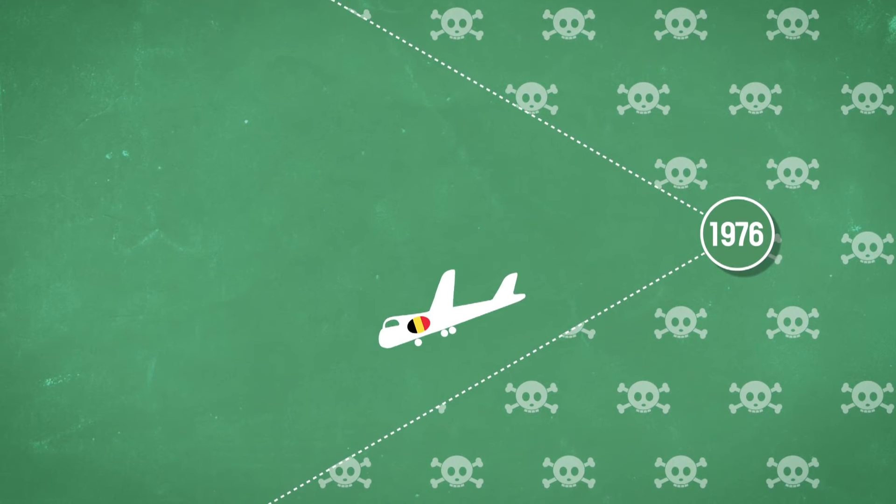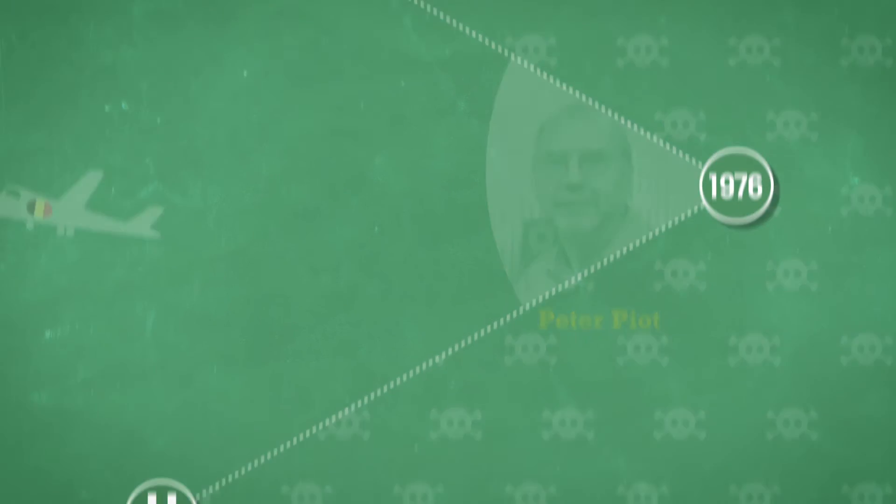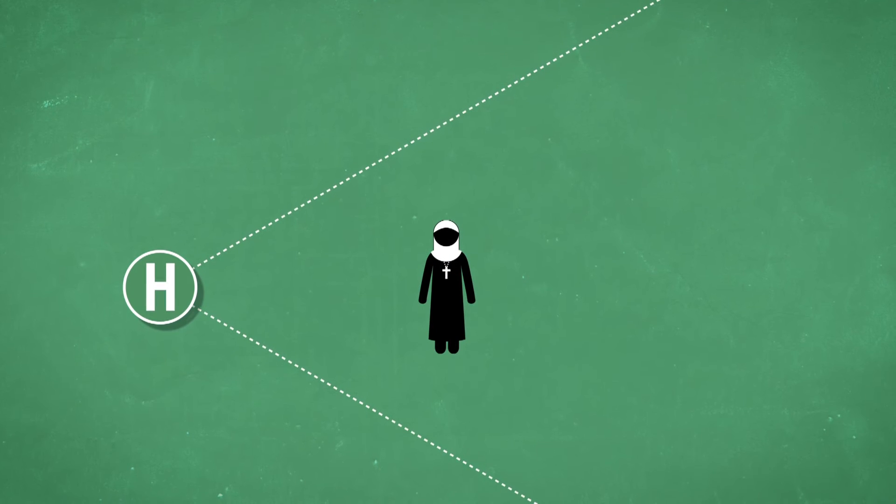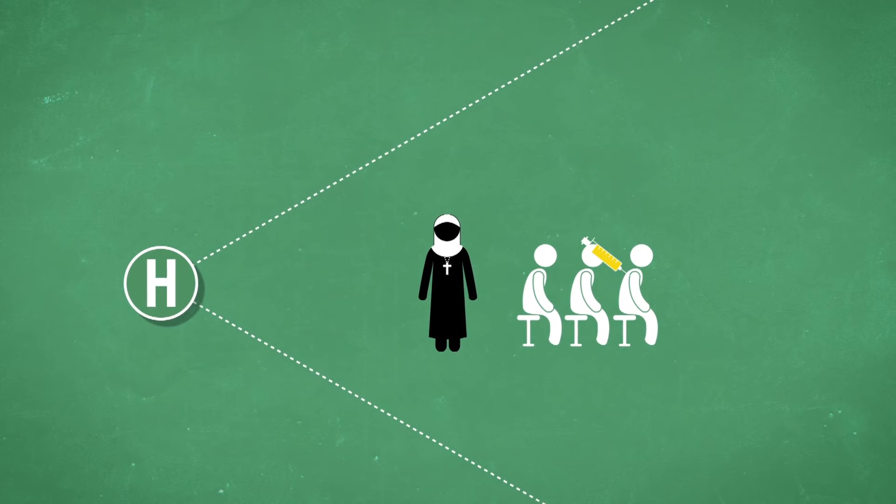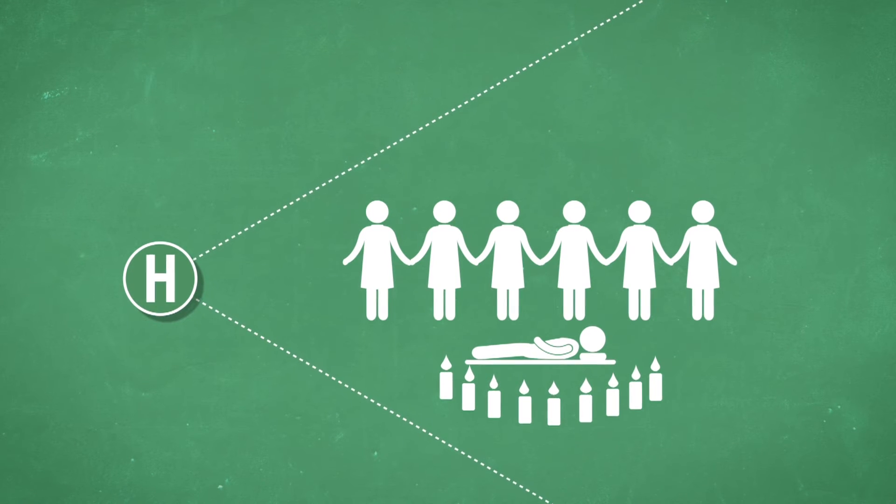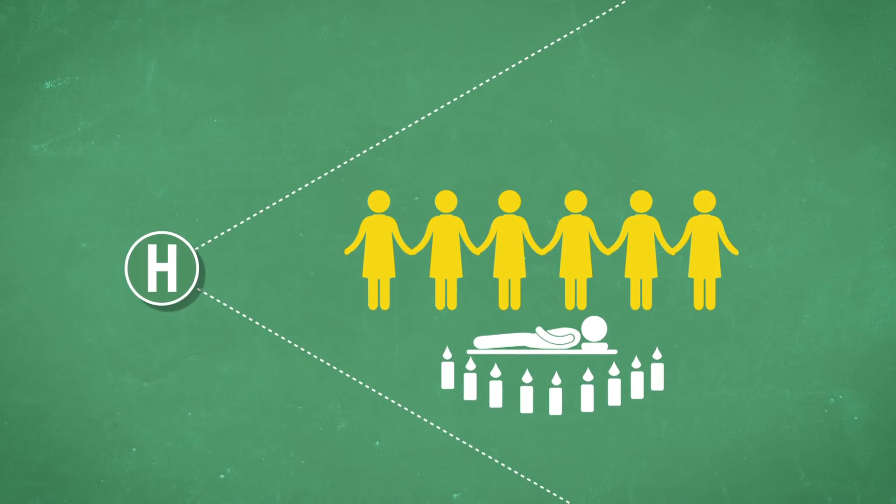But on the request of Belgian authorities, Peter Piot, one of the members of the Belgian team, went to Yambuku. He noticed the nuns used the same syringe on several patients. He also observed that those participating in the funeral rites of people who had died mysterious deaths would themselves fall ill.